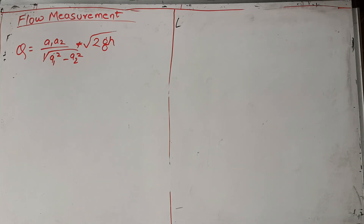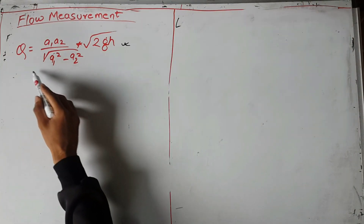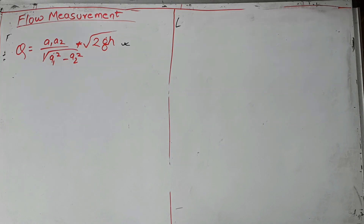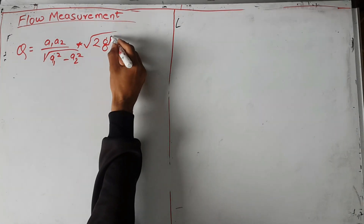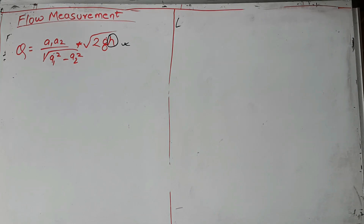In the last video we found the value of discharge through the venturimeter. The value of H is given by the differential manometer. Now we will see how to calculate the value of H.